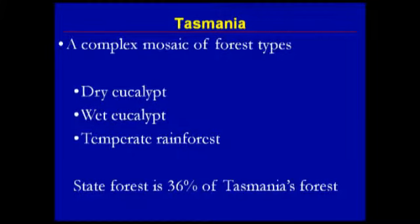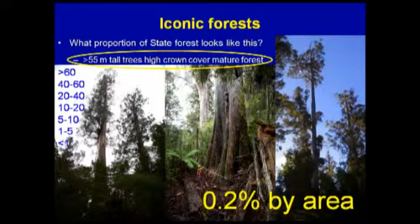Tasmania's forests are a complex mosaic of wet eucalypt, dry eucalypt, and temperate rainforest. I'm talking about only the 36% of all Tasmania's forests managed by Forestry Tasmania. I ask: what proportion of forests look like the iconic image — dominated by 55-meter tall trees with high crown cover? Most people guess between 1% and 60%; forestry professionals overestimate by 10 to 50 times actual, and the general public — among 2,000 to 3,000 people surveyed — overestimate by 50 to 300 times actual. The actual answer is 0.2%.